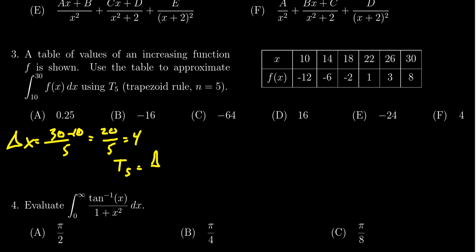Using the trapezoid rule t five, we're going to end up with delta x divided by two times the first entry, which is negative two, plus two times the next, negative six, plus two times the next, negative two, plus two times the next, which is one, plus two times three, plus the last one—no two on that one. So we just seek to simplify this.